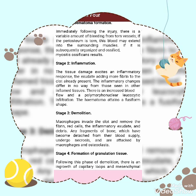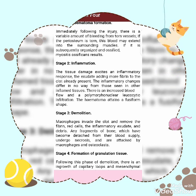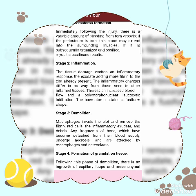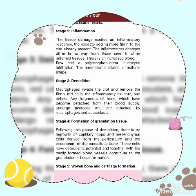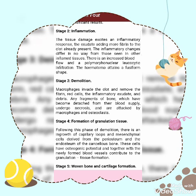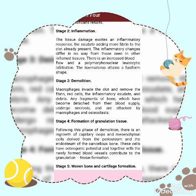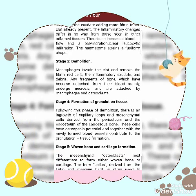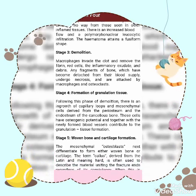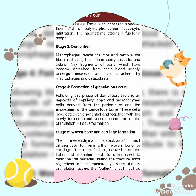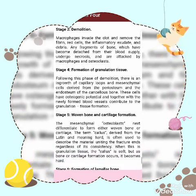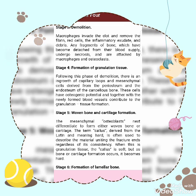The second type is lamellar or adult bone, in which the collagen bundles are arranged in parallel sheets. Stages in fracture healing: stage one is hematoma formation. Immediately following the injury there is a variable amount of bleeding from torn vessels. If the periosteum is torn, this blood may extend into the surrounding muscle. If it is subsequently organized and ossified, myositis ossificans results.